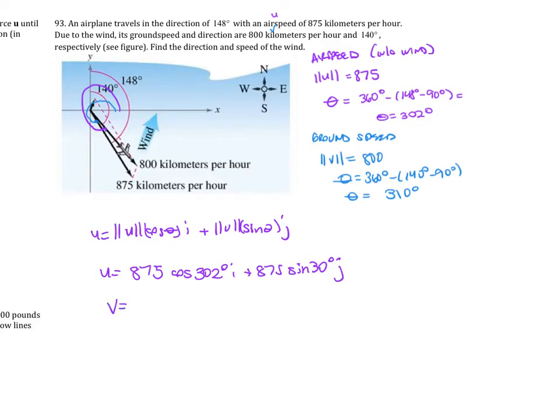So V is going to be 800 times cosine of 310 degrees I plus 800 sine of 310 degrees J.